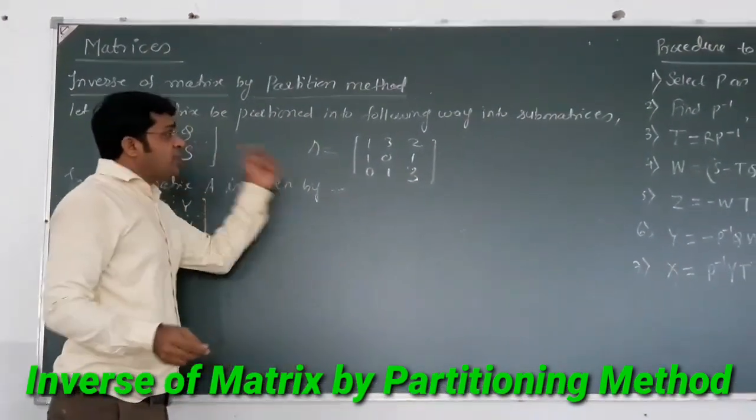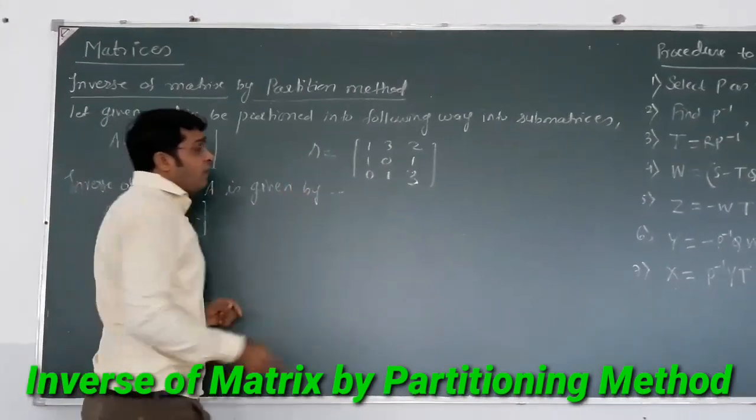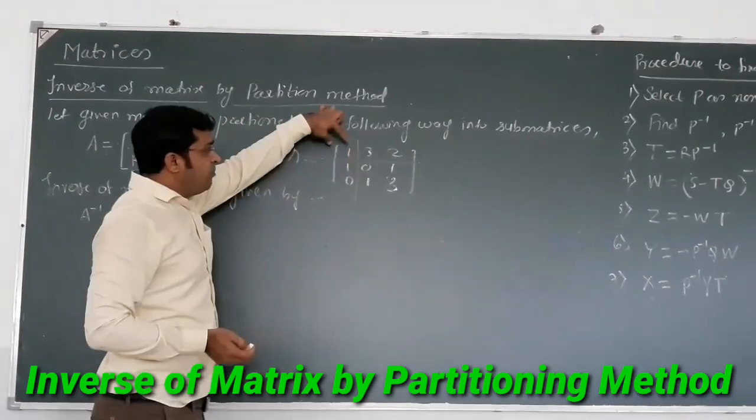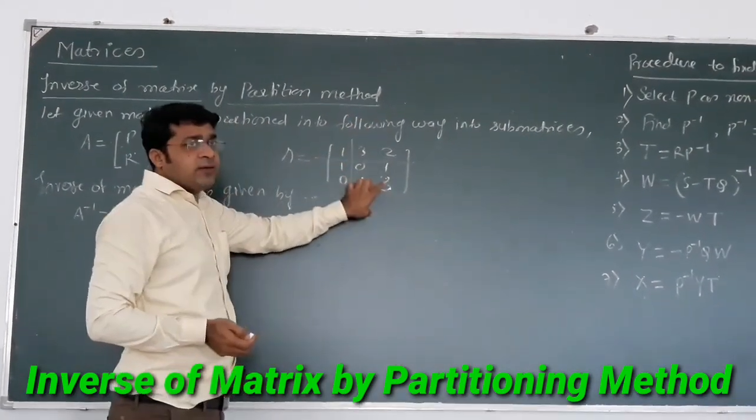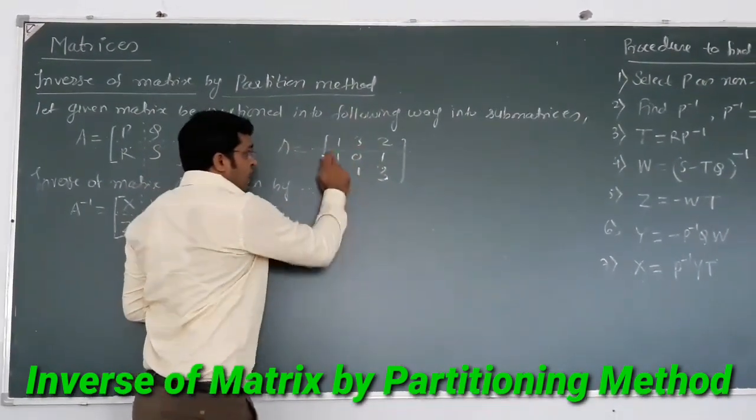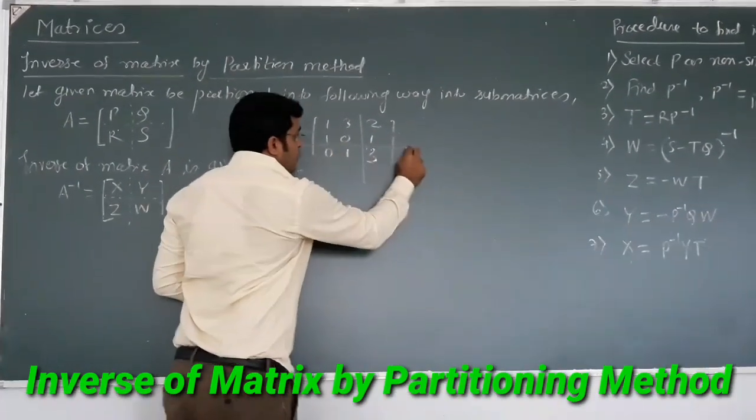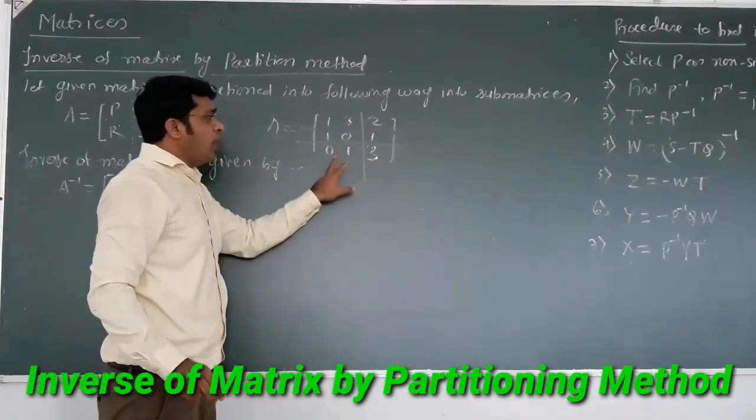Now we partition this matrix into four parts. We can partition this way: P, Q, R, and S. Or we have one more way of partitioning this. We can partition this way as well: again P, Q, R, S.